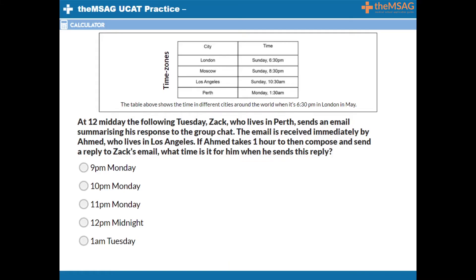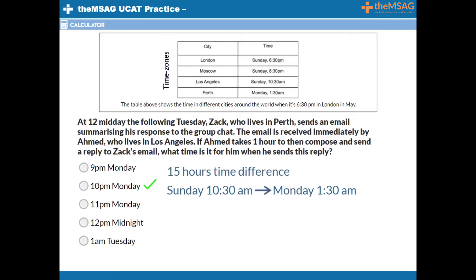Did you get 10pm on Monday? B is the correct answer. Using our method, we calculate how many hours Los Angeles is behind Perth. Using the time zone table, we can calculate that there is 15 hours difference between 10.30am on a Sunday and 1.30am on a Monday. Los Angeles is therefore 15 hours behind Perth. We need to take 15 hours away from 12 noon, which is when Zach sends the email, Perth time.